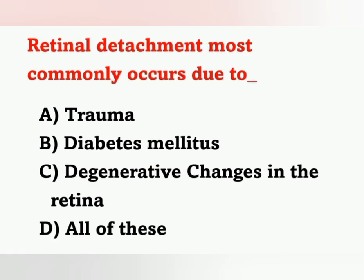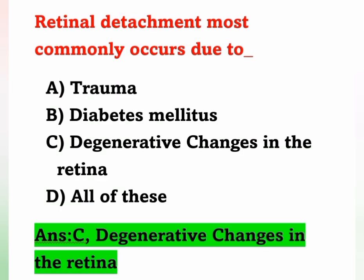Next question: Retinal detachment most commonly occurs due to — A) Diabetes mellitus, B) Degenerative changes in the retina, C) All of these. Retinal detachment occurs most commonly due to degenerative changes in the retina. Changes in vitreous humor may also cause retinal detachment.